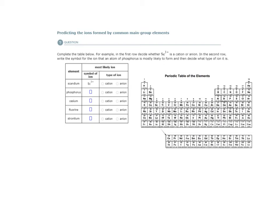Here we are predicting the ions formed by common main group elements, and again those common main group elements are these elements here: 1A, 2A, 3, 4A, 5A, 6A, 7A, and the noble gases in group 8A.